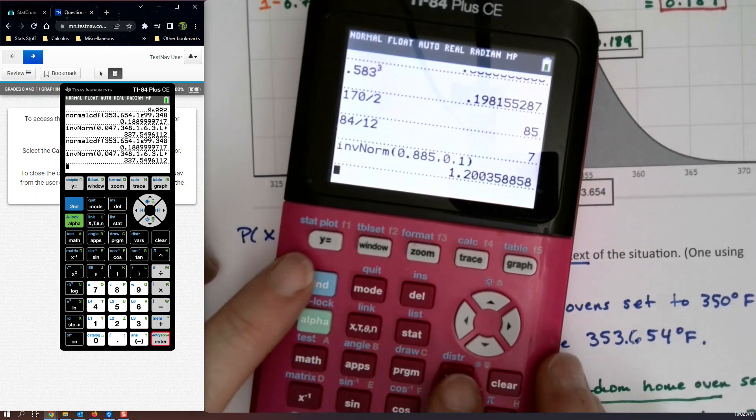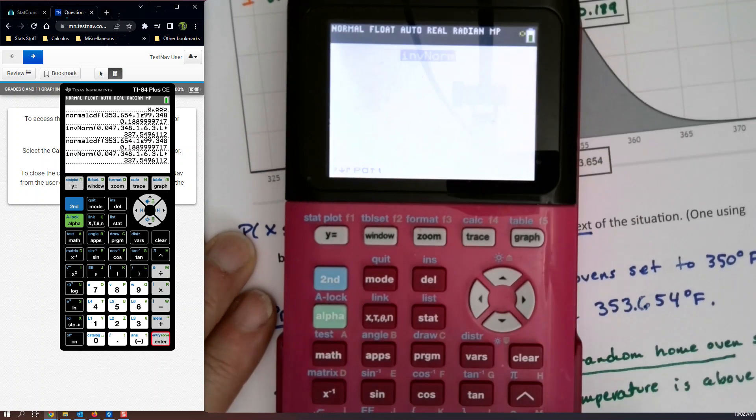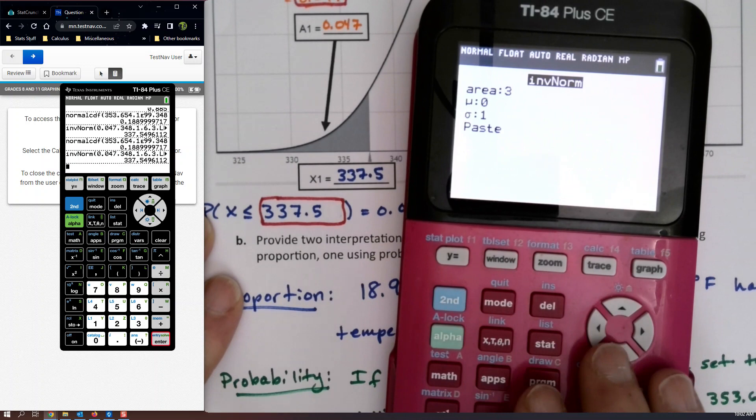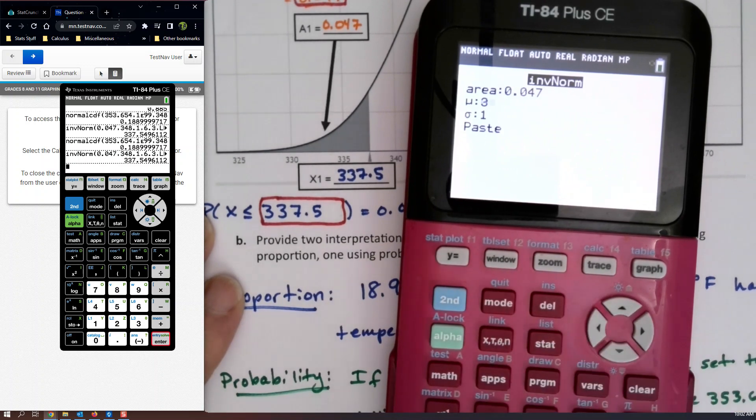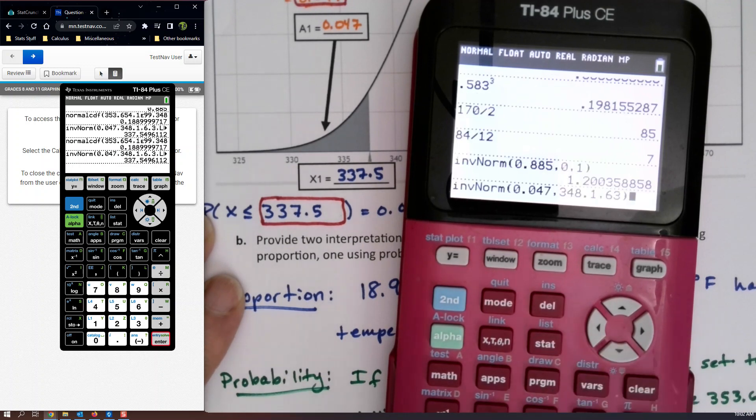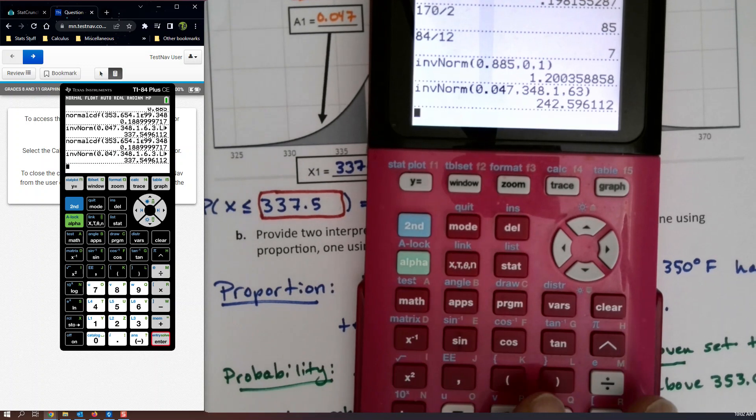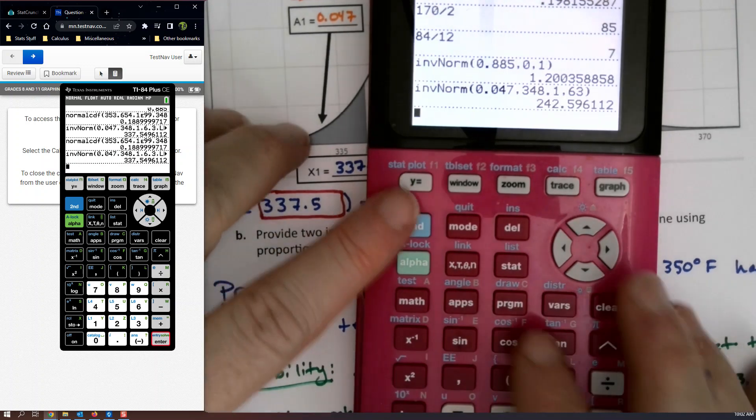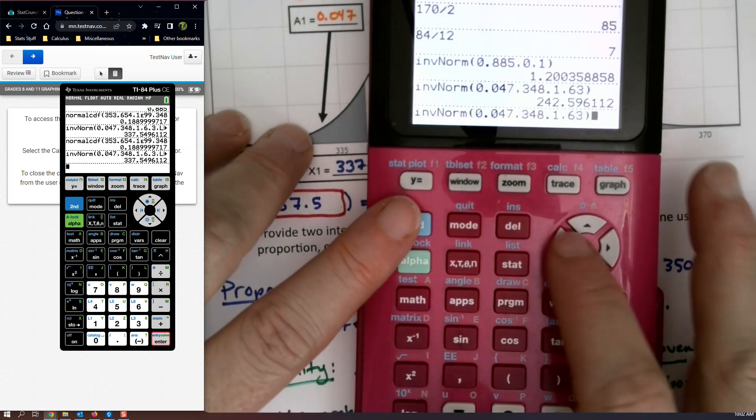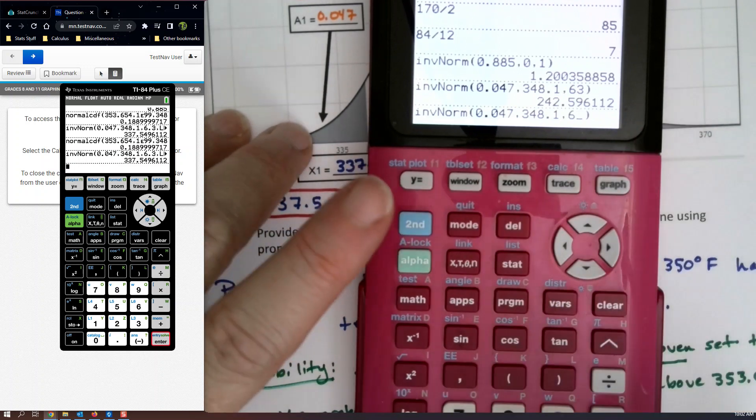So there's inverse norm, 0.047, 348.1, 6.3, left. And then in an old calculator it just won't show the left part, it'll just assume that it's left. So when you when you go to do it, second, inverse norm, you take 0.047 and then 348.1 and then 6.3 and then paste.